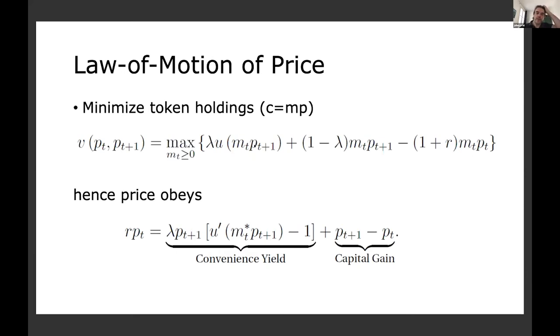Now, if you just take a first order condition, you get the law of motion for price. And it's very simple. The price is given by two components. You have a capital gain, so the token might appreciate or depreciate, P_{t+1} minus P_t. And then you have a convenience yield, which is the utility you get from the token when you consume it. So what is the utility? It's the marginal utility U' minus one, which is the price, everything is multiplied by P_t because you get as much services as the value in fiat of your tokens. So this convenience yield will be positive. The marginal utility will be higher than one. You will have a positive rent when you use the service. And this will incentivize users to hold tokens.